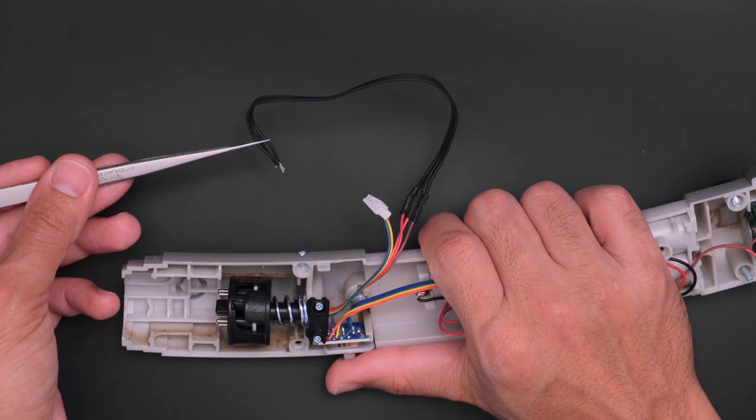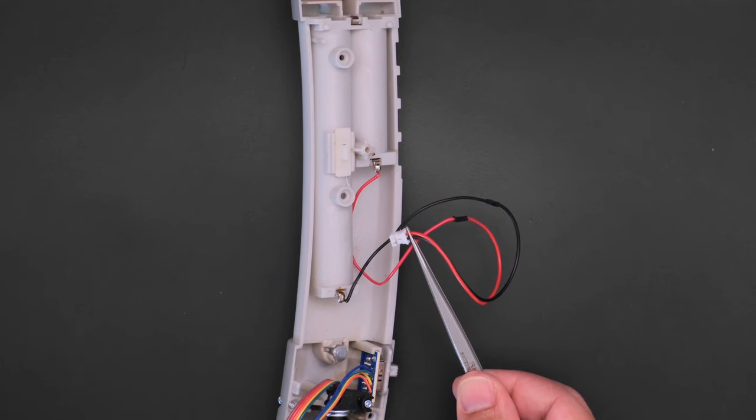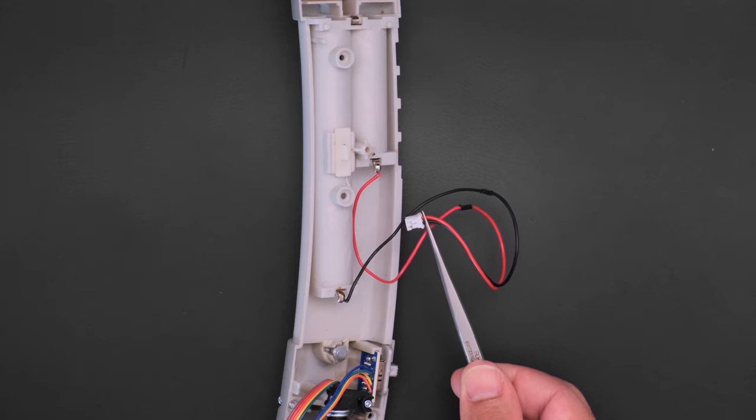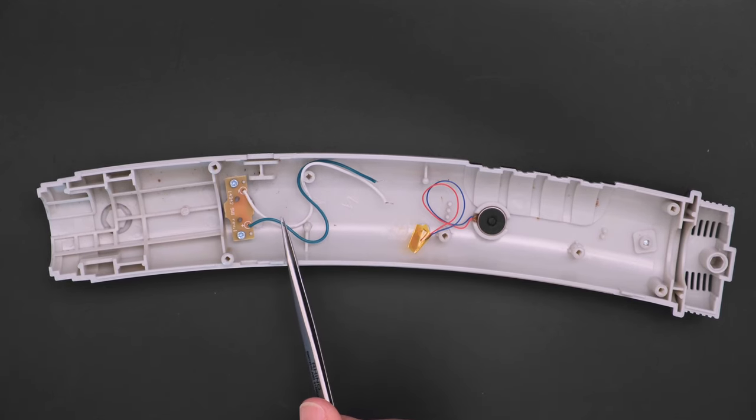You can splice wires to extend the cable from the pogo pin connector. Attach a 2-pin JST cable to the terminals on the battery holder so we can plug it into the feather. The wires from the button can be attached to the prop maker's screw block terminals.